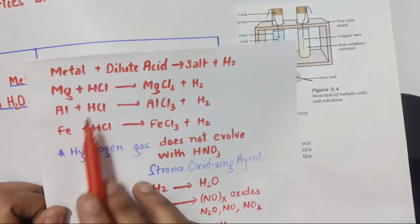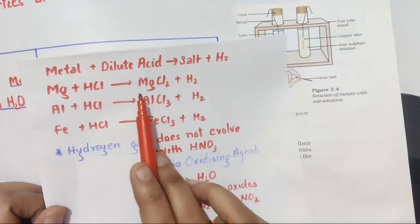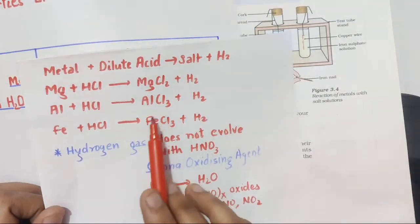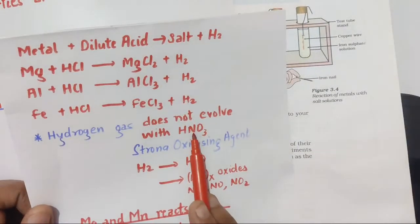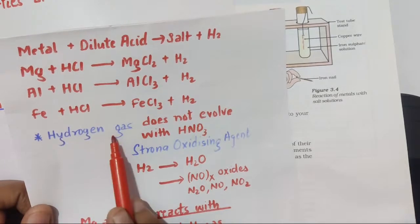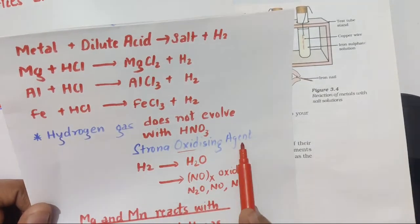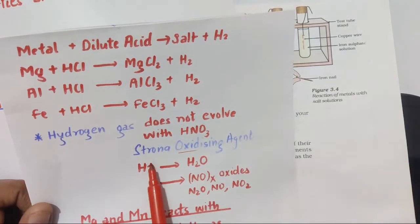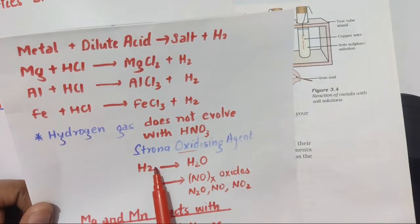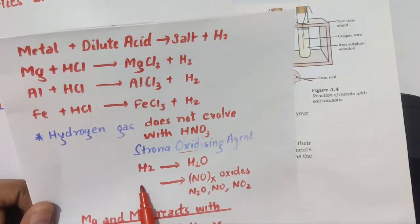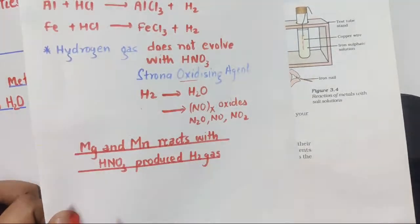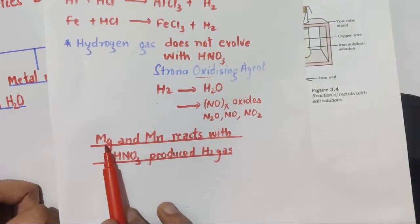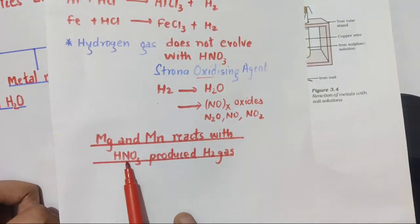Recap: metal reacts with acid forming salt and hydrogen. In all cases hydrogen gas is released, but in the case of HNO₃ no hydrogen gas is released because it is a strong oxidizing agent which converts hydrogen into water and itself into nitrogen oxides — N₂O, NO, and NO₂. The main exception is that magnesium and manganese react with HNO₃ and do produce hydrogen gas.